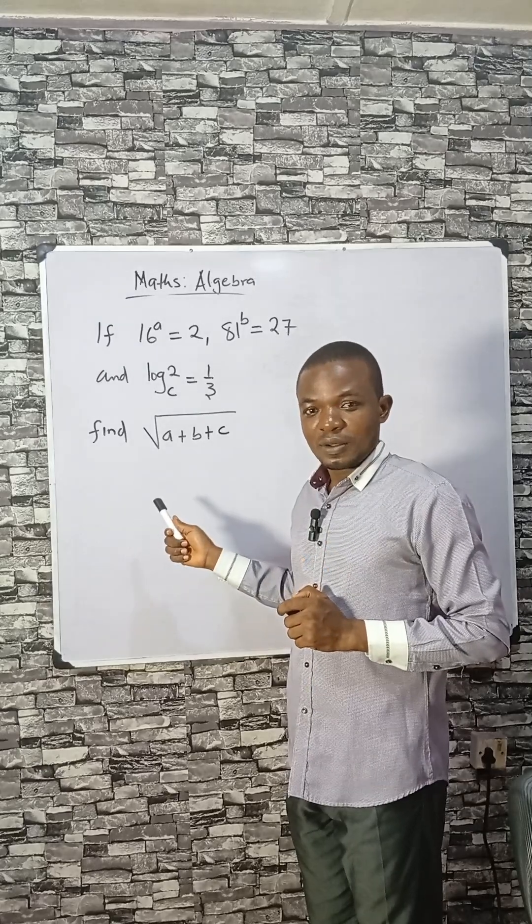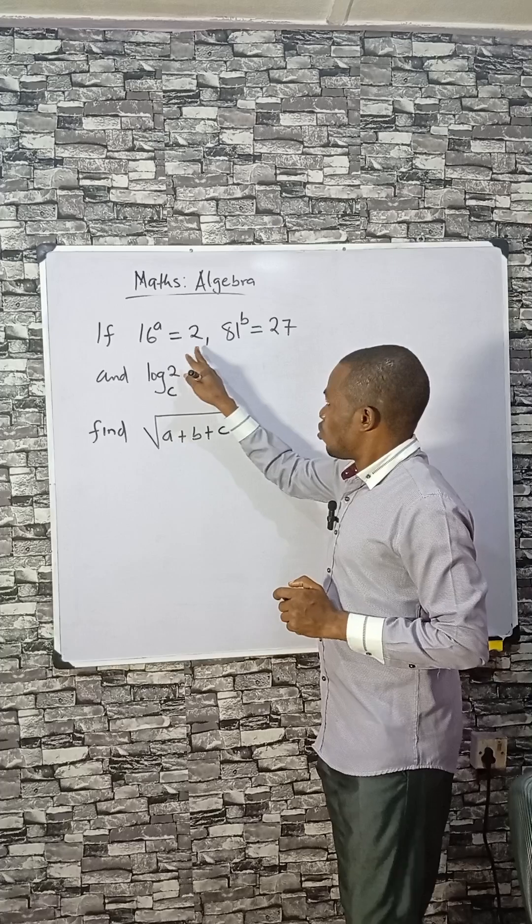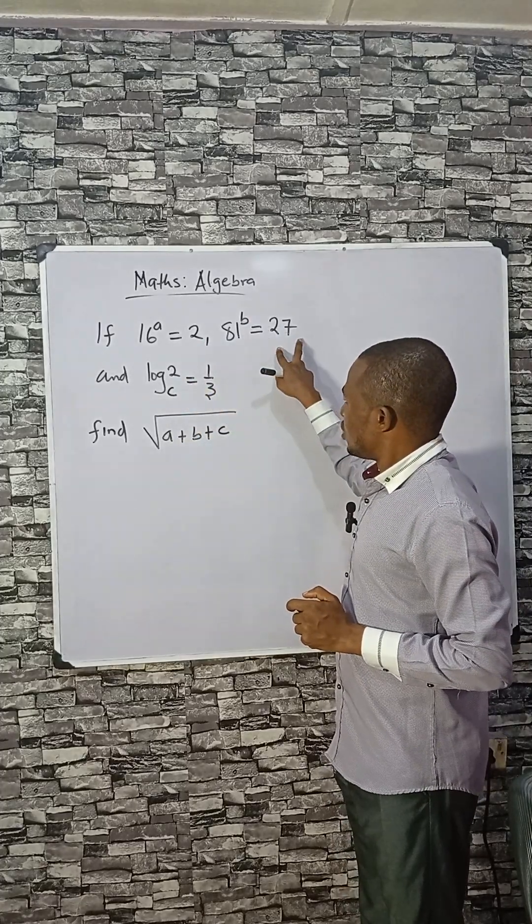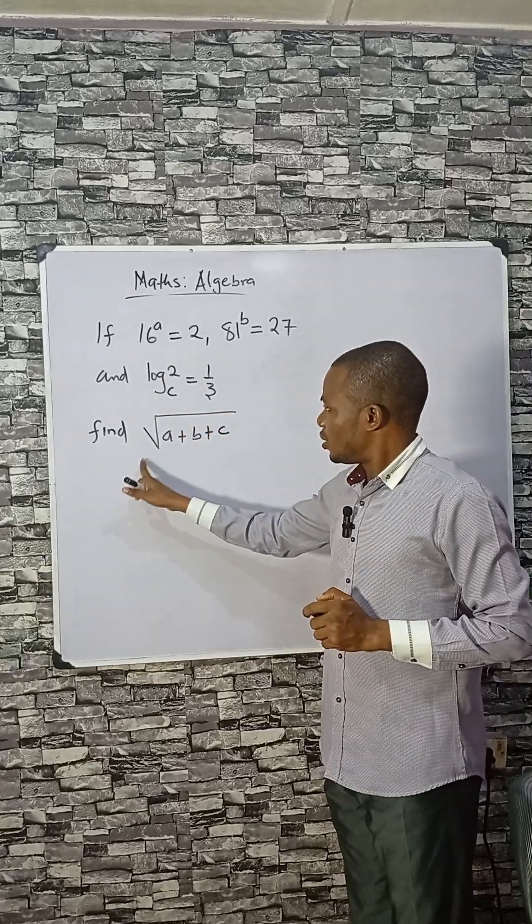We consider algebra today. If 16 raised to power a equals 2, 81 raised to power b equals 27, and log base 2 of c is 1 over 3, find this.